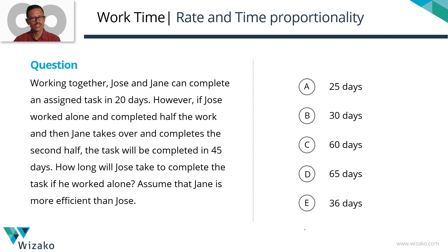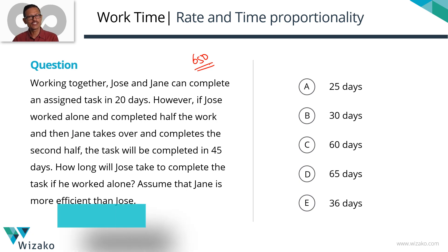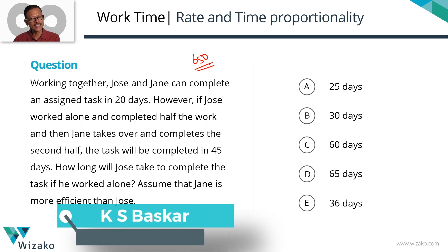This is a medium difficulty GMAT problem solving question — classify it as a 650-level question. It's a word problem, and the concept tested is work-time. This is an interesting question because the way you have to frame the equations is quite interesting. Let's get started.